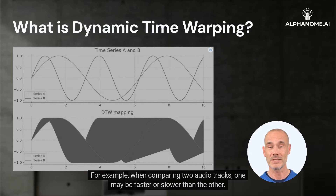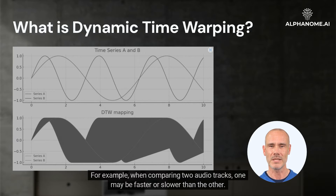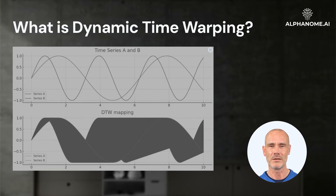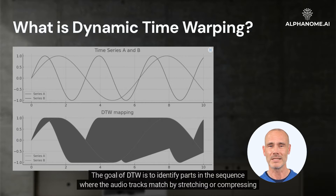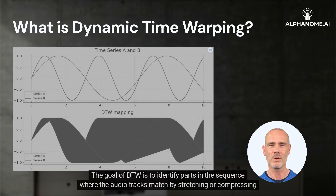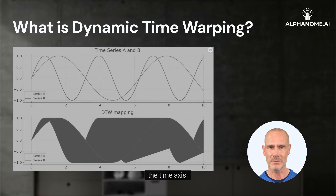For example, when comparing two audio tracks, one may be faster or slower than the other. The goal of DTW is to identify parts in the sequence where the audio tracks match by stretching or compressing the time axis.